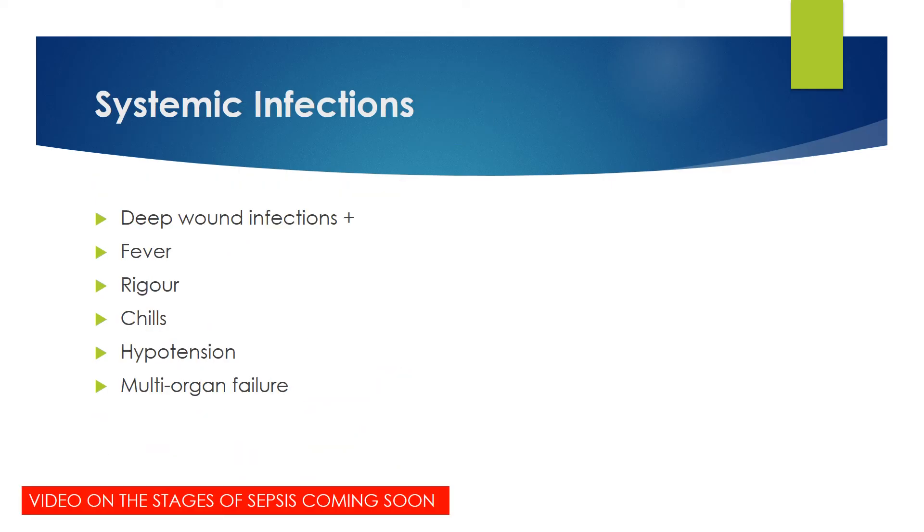So systemic infections are things like sepsis, where it's gotten into your blood and it's affecting your entire body. So these include everything that deep wound infections have, plus fever, rigor, chills, hypotension, multi-organ failure, basically the stages of sepsis.